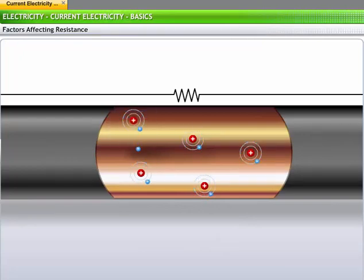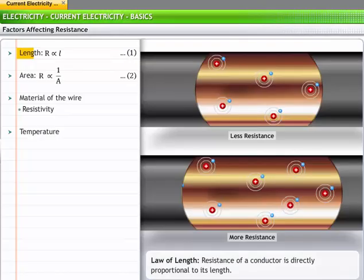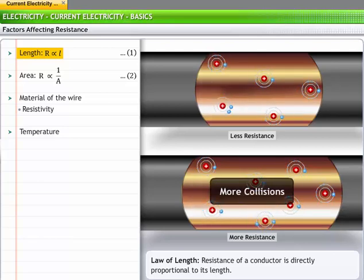Resistance to charge flow within a conductor is affected by some clearly identifiable variables. First, the resistance of a conductor is directly proportional to its length. The longer the conductor, the more resistance it offers. After all, if resistance occurs as a result of collisions between electrons and the atoms of the conductor, then there are likely to be more collisions in a longer conductor. More collisions mean more resistance. This relationship between resistance and the length of the conductor is termed as the law of length.